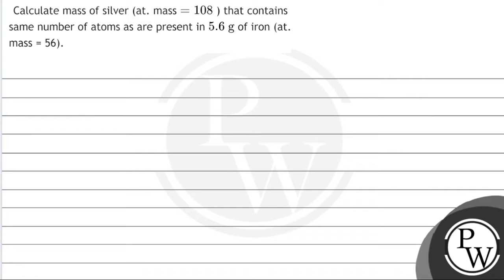Let's read this question. The question says: calculate the mass of silver at atomic mass 108 that contains the same number of atoms as are present in 5.6 grams of iron at atomic mass 56. Here we have been asked how much silver will contain the same number of atoms as iron.